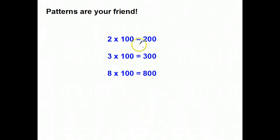Patterns are still your friend. This time, instead of multiplying times 10, we're multiplying times 100. So, here is my 2 in 2 times 100. 2 times 100 is 200. There's my 2. 2 zeros. Well, 2 zeros. 3 times 100 is 300. 8 times 100 is 800. I've got the initial number here. Same number of zeros in my problem as in my answer. And then 8 times 100 is also 8 hundreds.